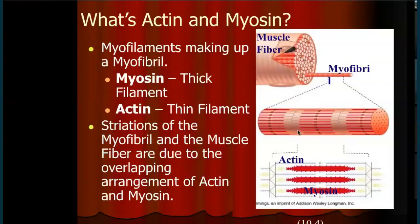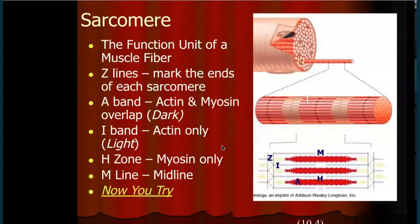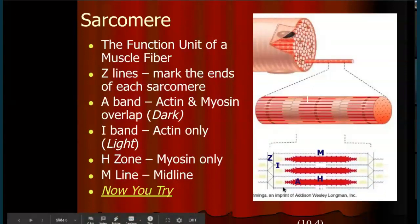The overlap of thick and thin makes a dark band; where you only have the thin, that makes a light band — that's what creates the stripes or striations. The individual unit is called a sarcomere — the functional unit of muscles. A fibril is made up of several sarcomeres laid end to end. Notice the zigzag line: Z for zigzag. This marks the end of the sarcomere, so from one Z line to the next is a single sarcomere. The A band is the full length of myosin — that does not change.